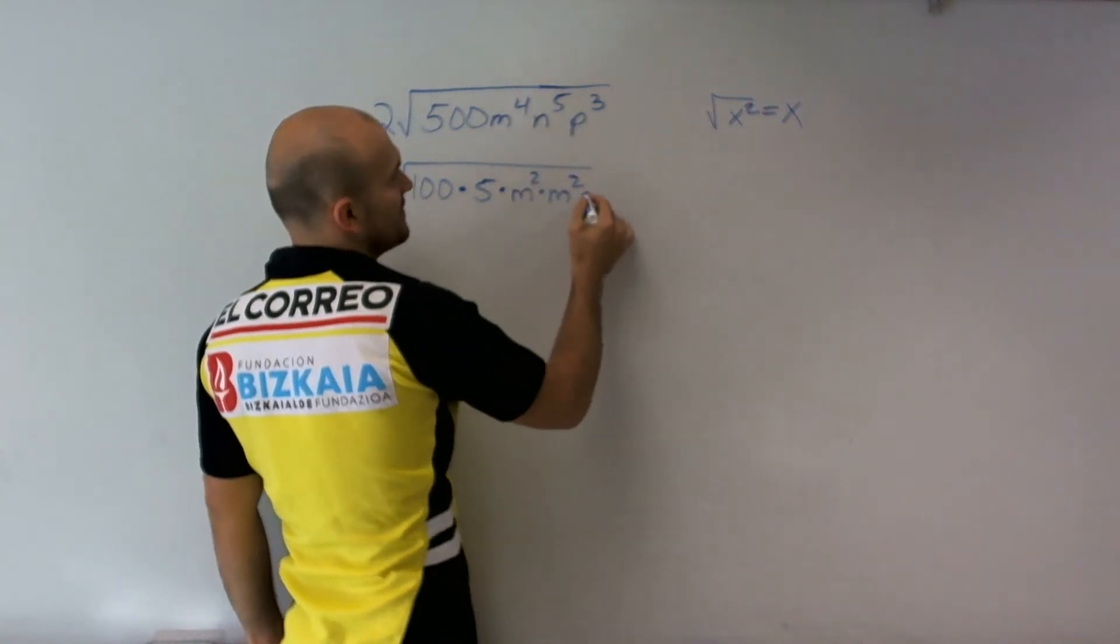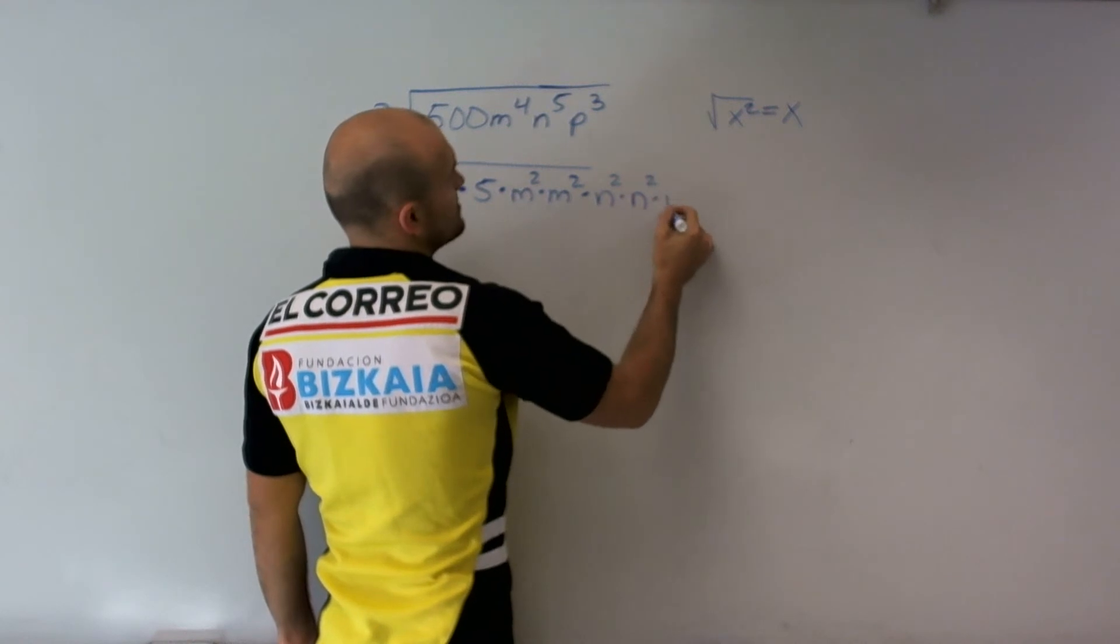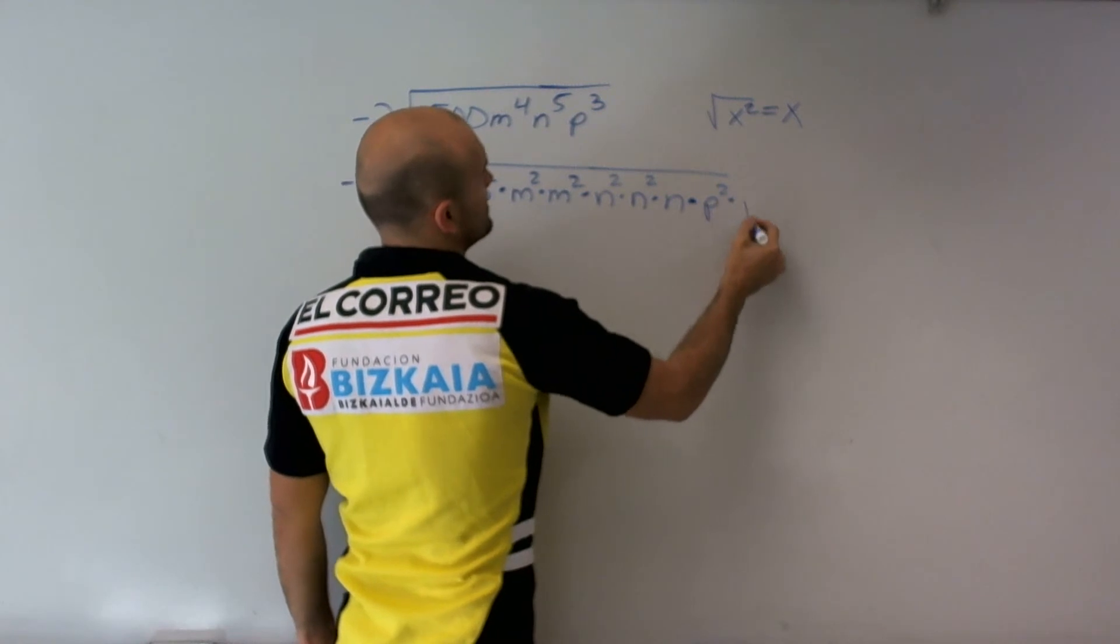n to the 5th can be n squared times n squared times n. And p cubed can just be p squared times p.